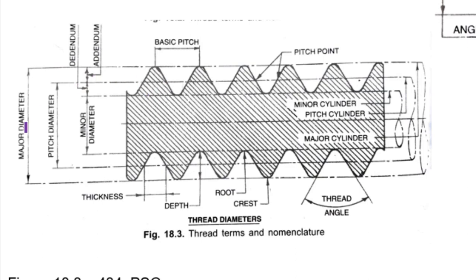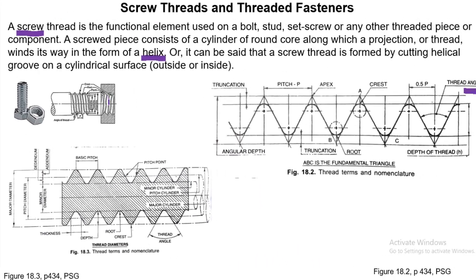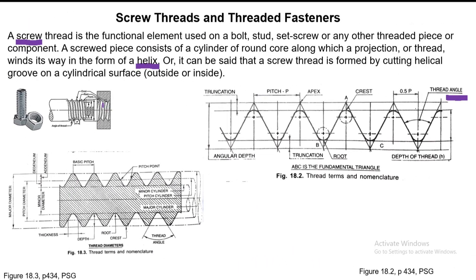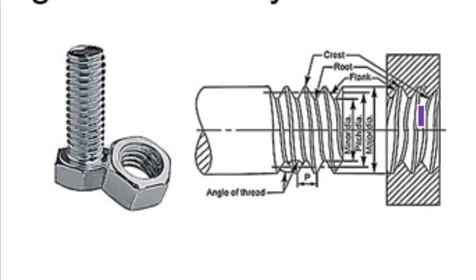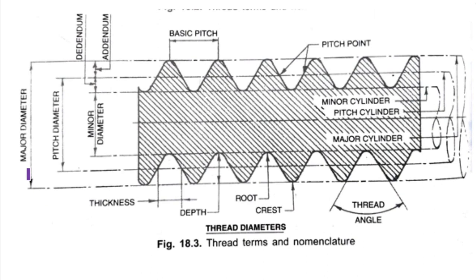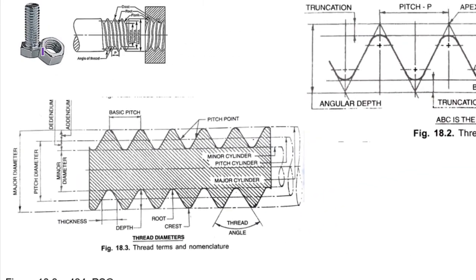For the nut, the major and minor diameters are slightly reversed: connecting the crests gives the minor diameter, and connecting the roots gives the major diameter. Whereas for the bolt, connecting the crests gives the major diameter and connecting the roots gives the minor diameter.